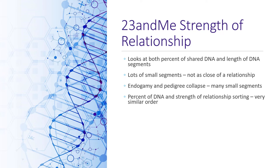For people who don't come from endogamous populations, the percent of DNA and strength of relationship sorting will produce a very similar order of matches. When looking at my mom's kit at 23andMe, there were just a couple of people whose positions changed slightly on the first and second pages. When getting down to third and fourth cousins, there was more intermixing — it wasn't in perfect order anymore when sorted by percent.